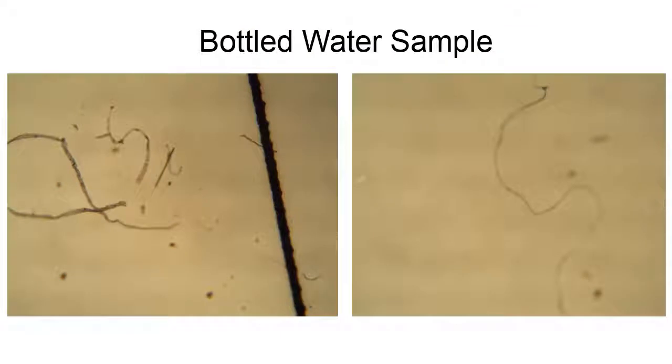Here are two pieces of microplastic that we found in our bottled water sample. You can notice that they are long and thin strips and appear to be clear plastic. These are likely from the plastic bottle itself.